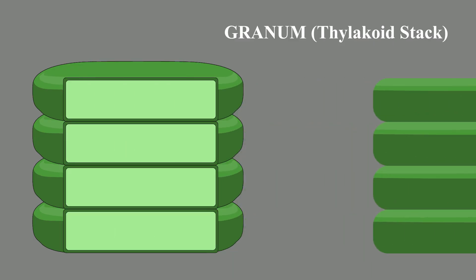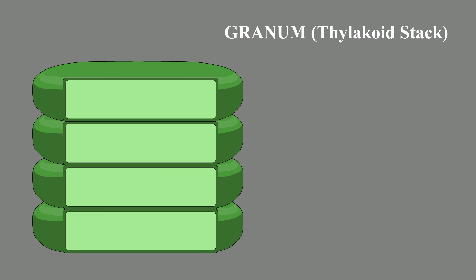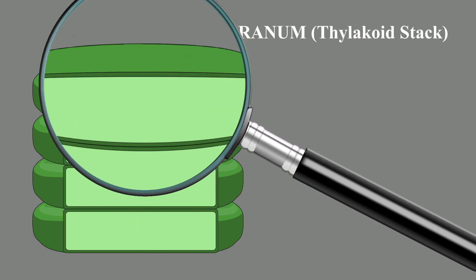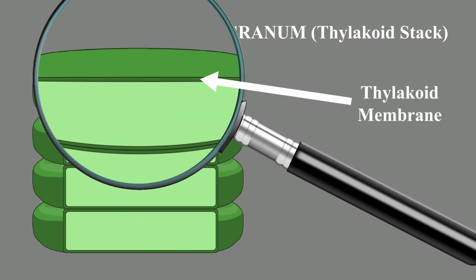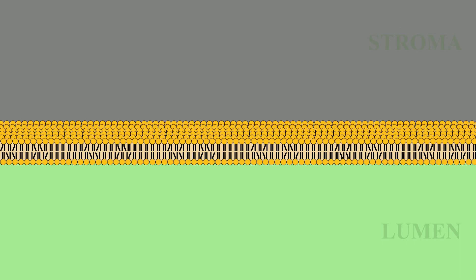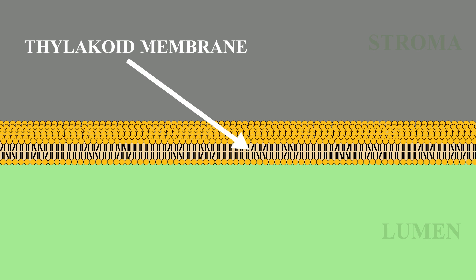If you were to take a granum and look at a cross-section, you would find the site of the light-dependent reactions at the thylakoid membrane. The electron transport chain conducting these reactions is found here on the thylakoid membrane. Note the location of the stroma, as well as the lumen — in other words, the inside of the thylakoid disk.